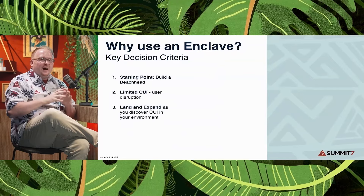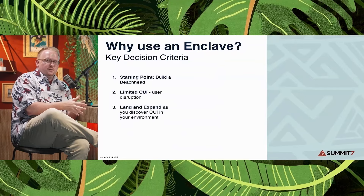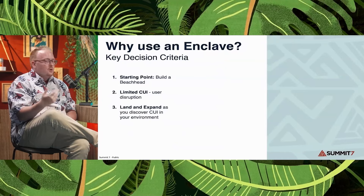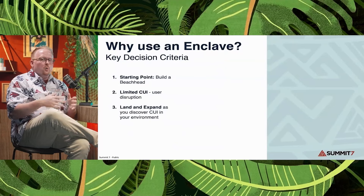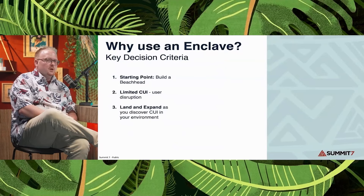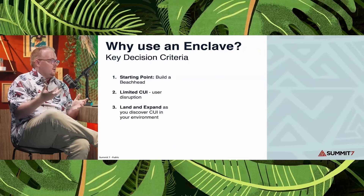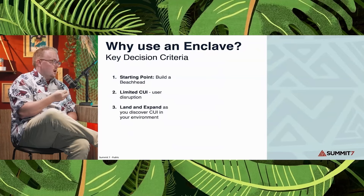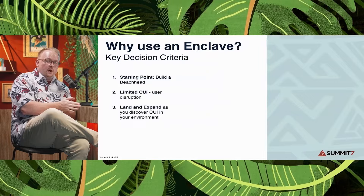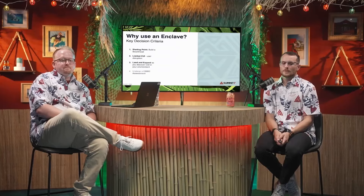Third: land and expand. As you're finding CUI in your organization, you have a place to put it. A great example is CMMC certifications — we don't know which contracts will hit first, but if you go after one you'll have a place to take that CUI into your certified enclave. From there, you can slowly start expanding to deal with more contracts and more systems, instead of a big-bang approach.